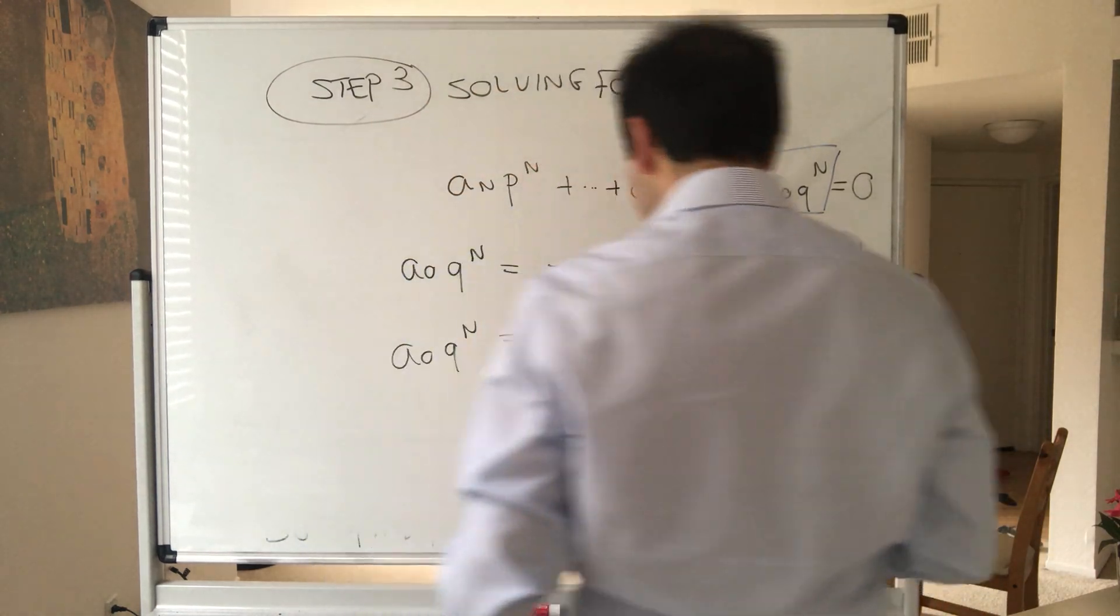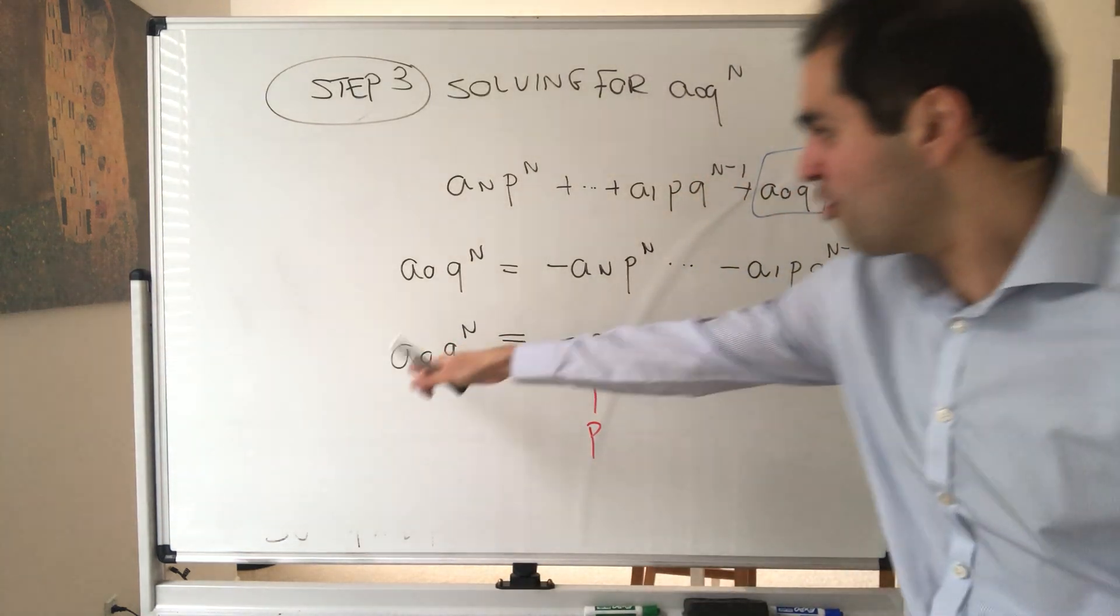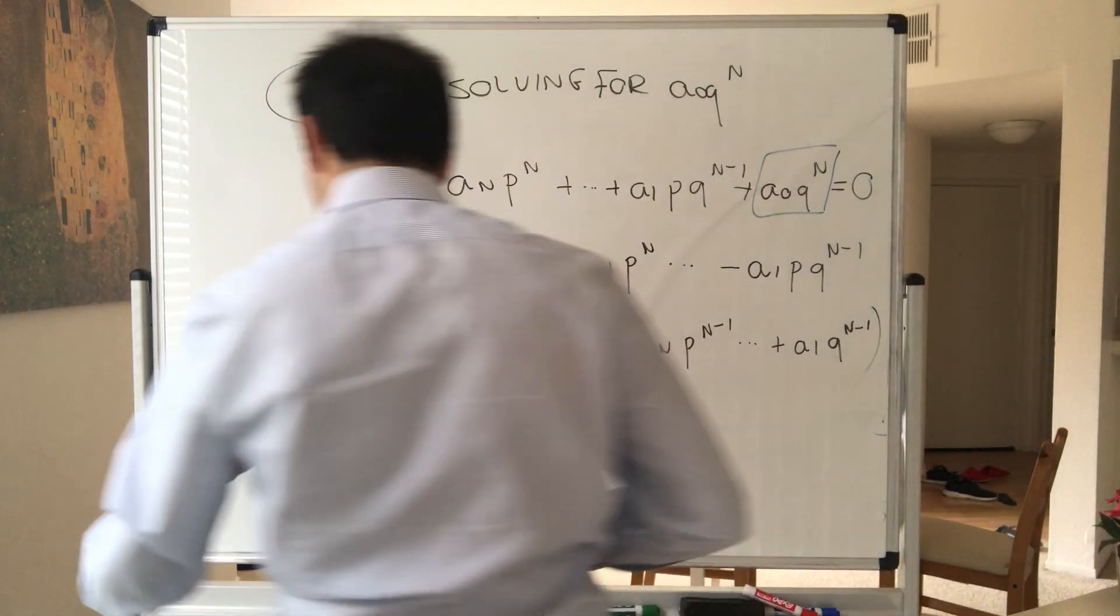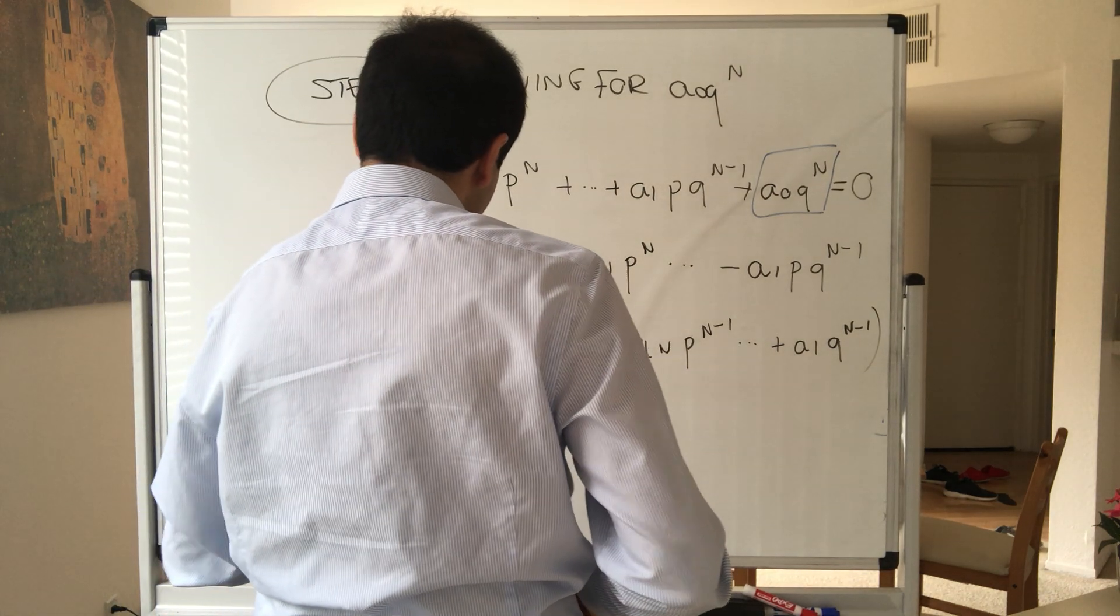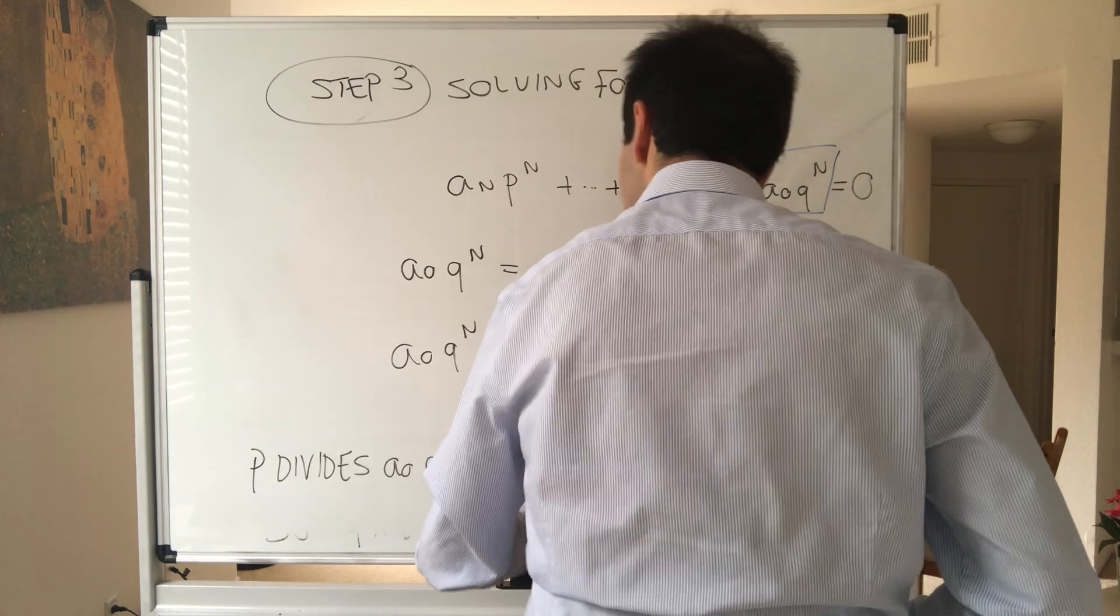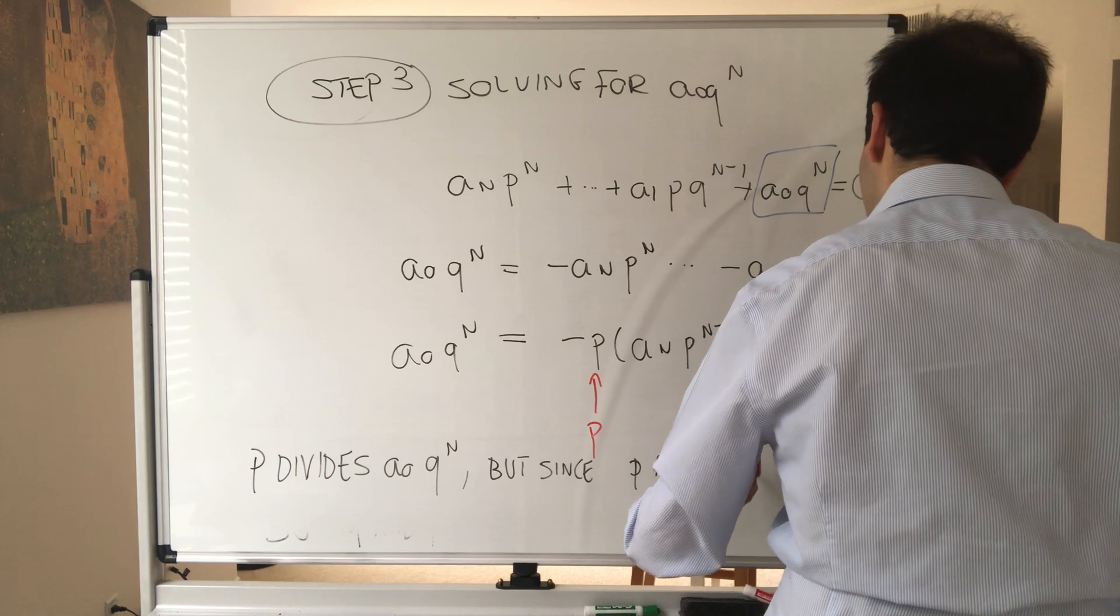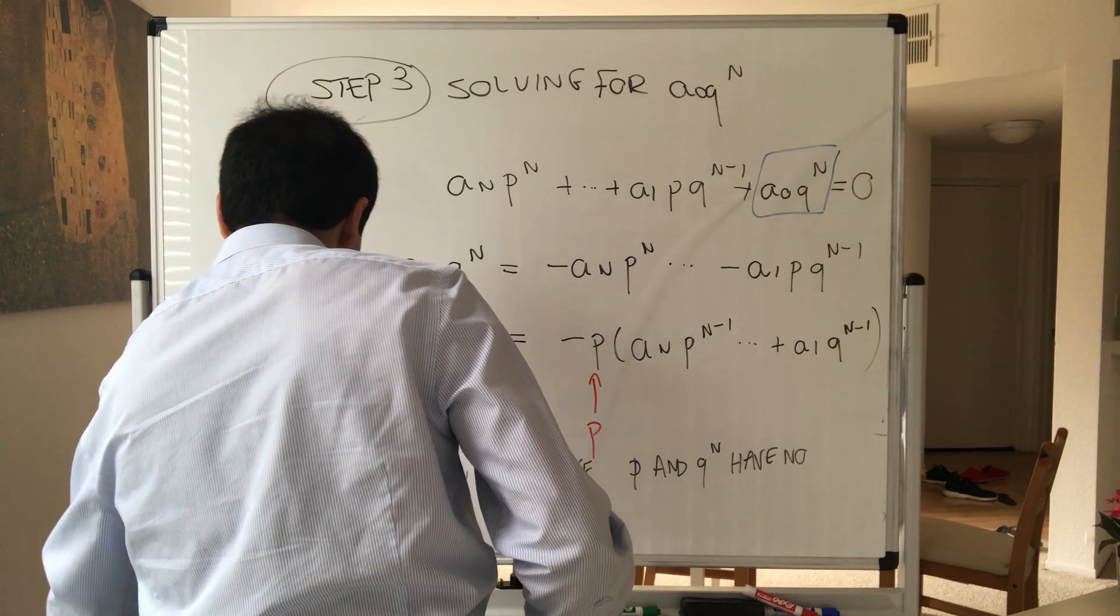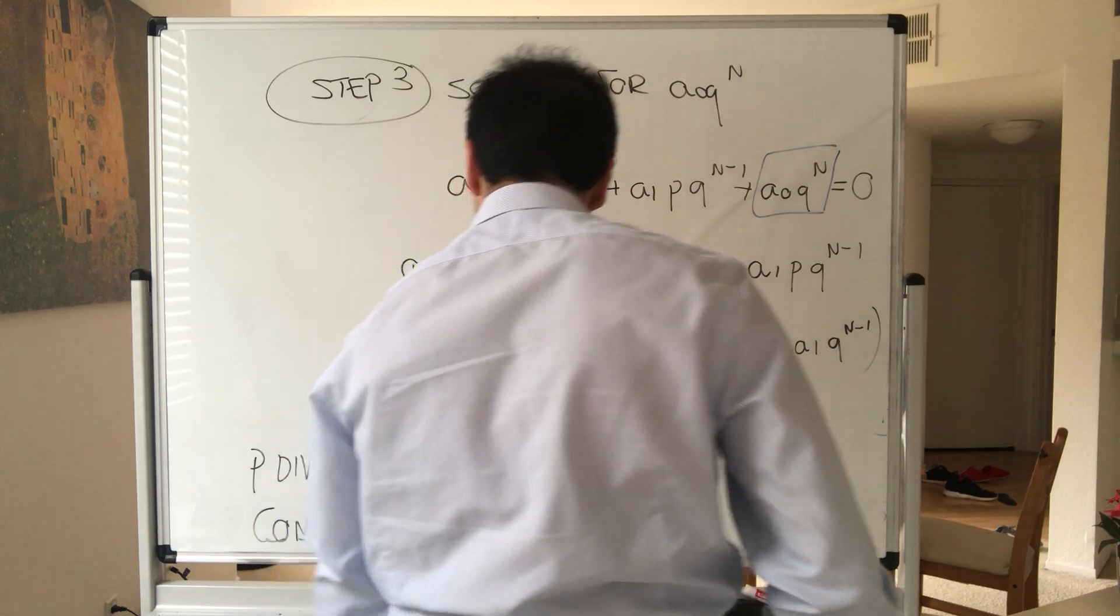And again, completely symmetric. What do we get? P divides the right-hand side, therefore by equality p divides the left-hand side. So p divides a_0 q^n, but since p and q^n have no common factors...